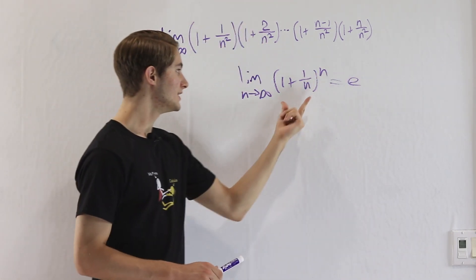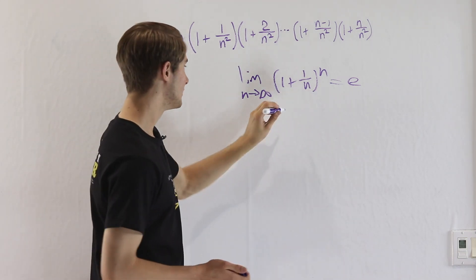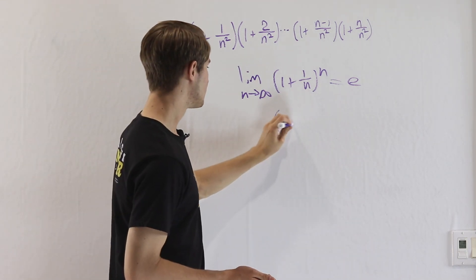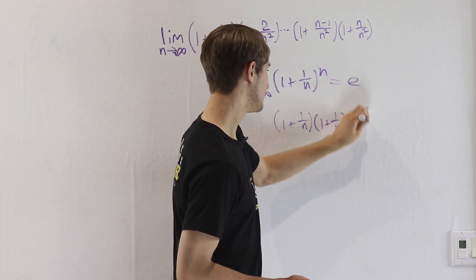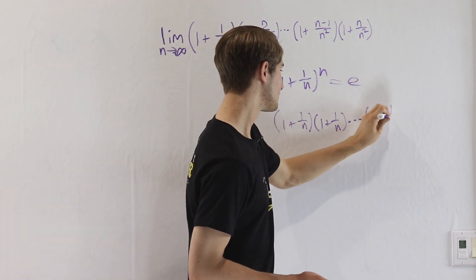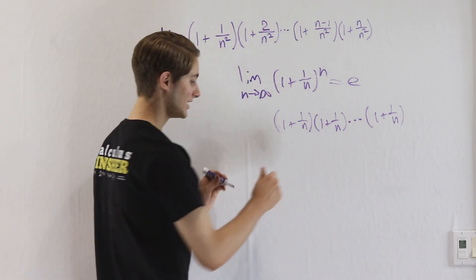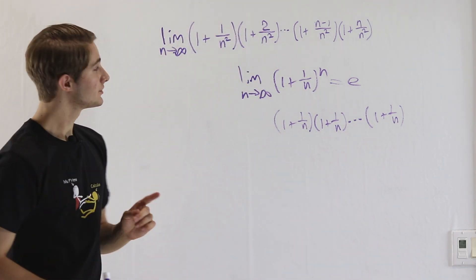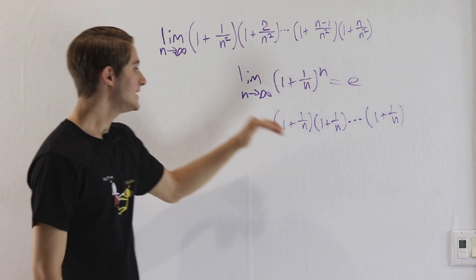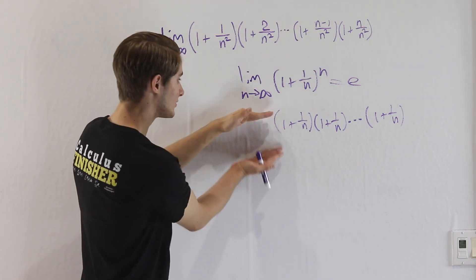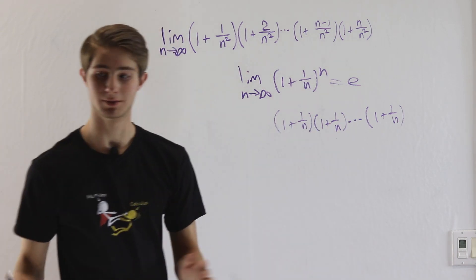We could also write 1 plus 1 over n to the power of n, if we expand out the power, as 1 plus 1 over n times 1 plus 1 over n and so on, with n of these multiplied together. Maybe there's some way that we can take our limit and make it look like this — then we can write it in terms of e and the problem is solved.